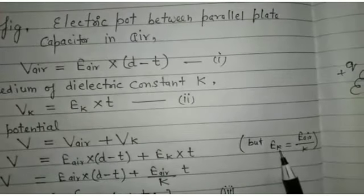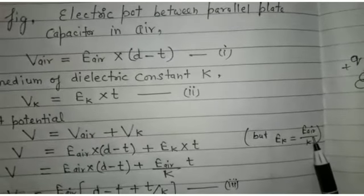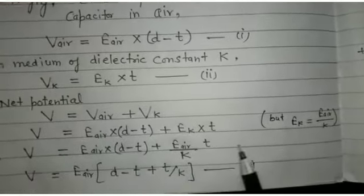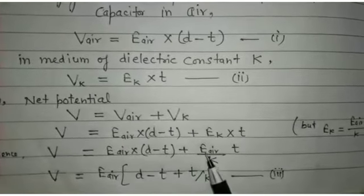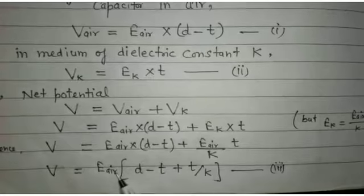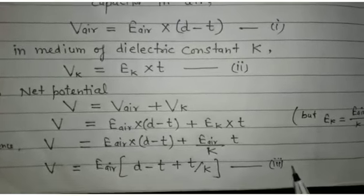But E_K electric field in medium is equal to electric field in air upon K. Putting the value E_air into d minus t plus E_air upon K into t. E_air common d minus t plus t upon K. This is the third equation.